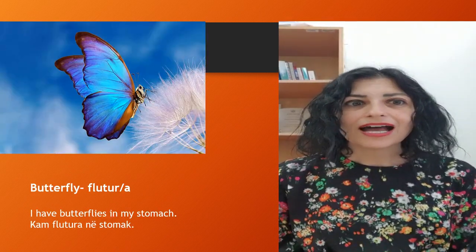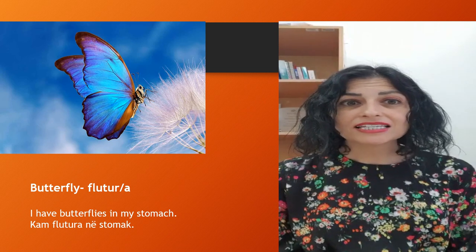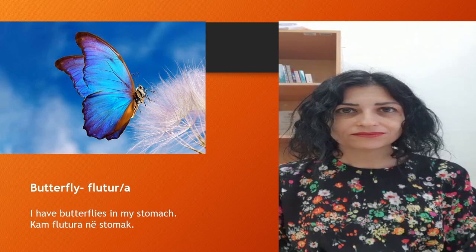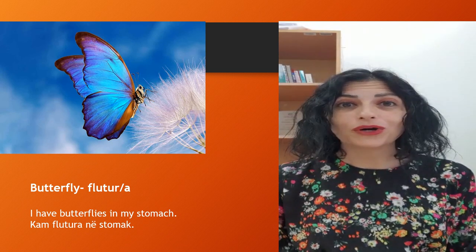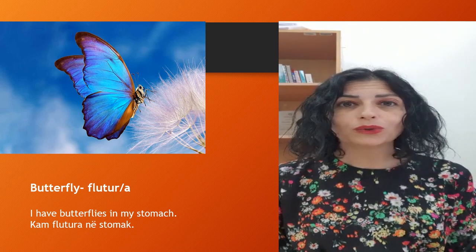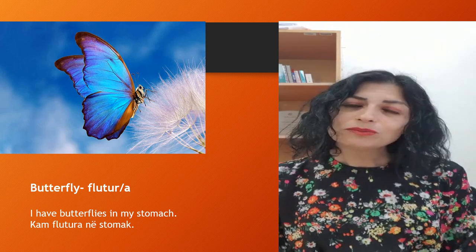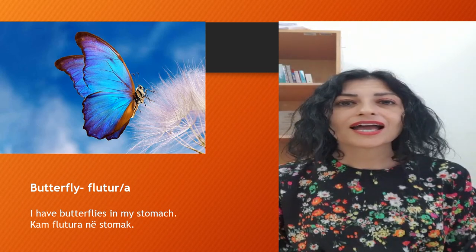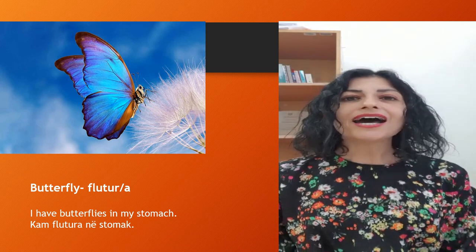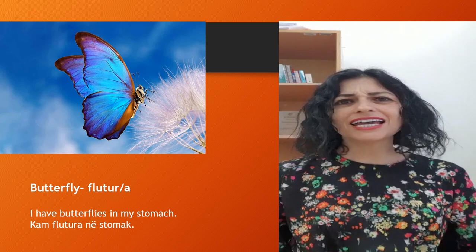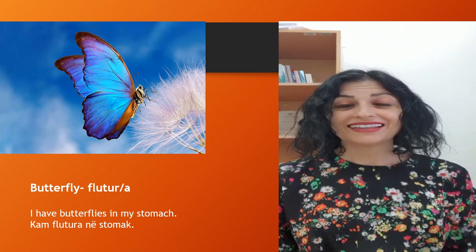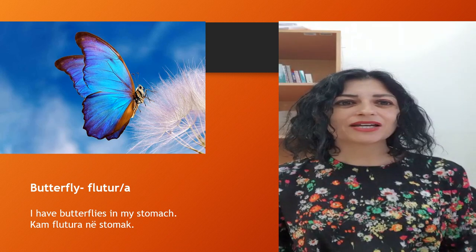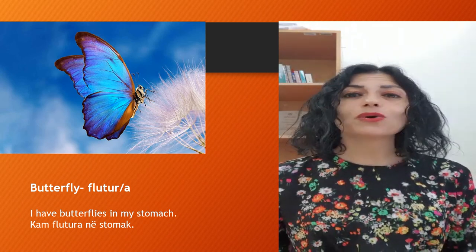Here we have butterfly. In Albanian it's flutur — definite form flutura. That can also be a name for a girl — Flutura. For example, 'I have butterflies in my stomach' — that is maybe when you are in love. In Albanian we say: kam flutura në stomak.